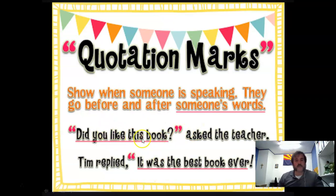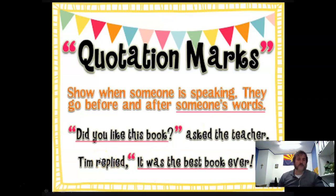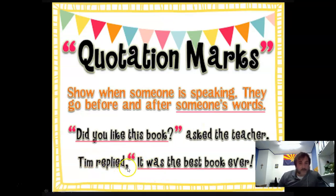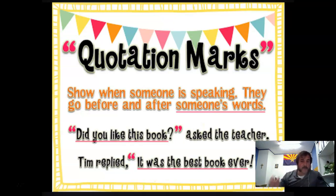Quotation marks can also come at the end of the sentence. For example: Tim replied, 'It was the best book ever.' Notice the quotation marks go right around exactly what Tim said — Tim didn't say 'Tim replied,' so you don't put quotation marks there. Notice it ends with the correct punctuation because it also ends the sentence, and it starts with a capital letter inside the quotes. The comma comes right before the quote. You didn't need a comma when the quote was first, but when the quote comes last, you've got to have a comma in there — it signals to the reader that a quote is coming up.